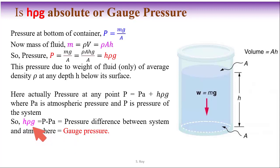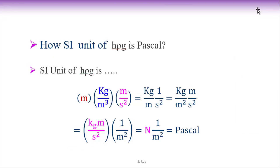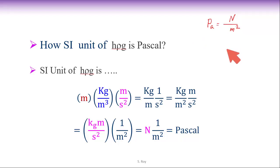So h·ρ·g indicates gauge pressure — it is the pressure calculated with respect to atmospheric pressure, not the zero reference. Now the SI unit of h·ρ·g is Pascal. We need to know how the unit of h·ρ·g is Pascal. To get it, we should know the definition of Pascal: Pascal is a unit of pressure equal to Newton per meter squared.